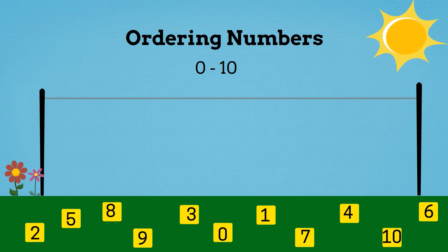Which is the lowest number? It's 0. 0 means nothing. So we're going to put 0 first on the washing line.